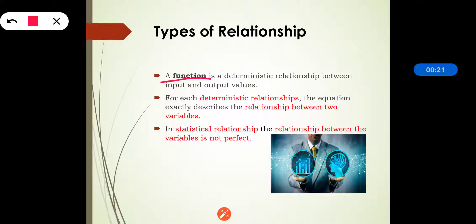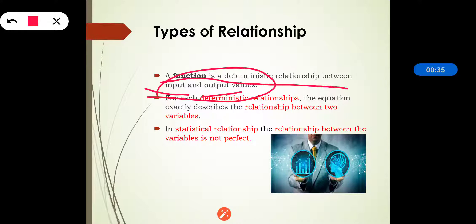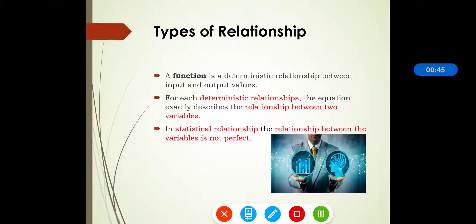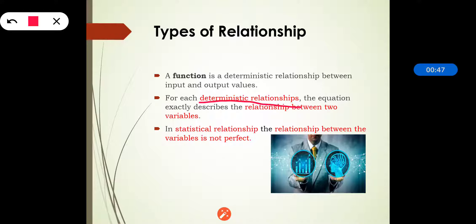A function is a deterministic relationship between input and output values. For each deterministic relationship, the equation exactly describes the relationship between two variables. Whenever we are talking about the deterministic relationship, the equation describes the relationship between two variables.